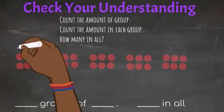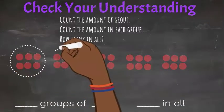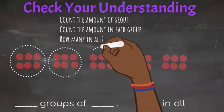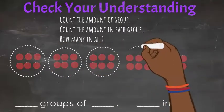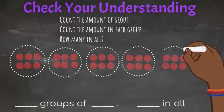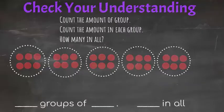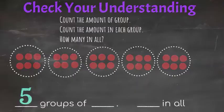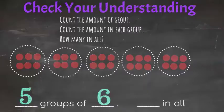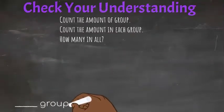Let's try another one. Remember, count the amount of groups, count the amount in each group, and then how many in all. How many groups do you see? Excellent — five groups. And how many are in each group? Six. Well done. Did you count how many are in all? Excellent — if you counted correctly, you should get 30.